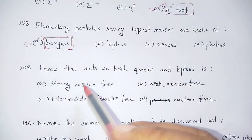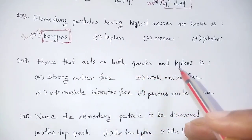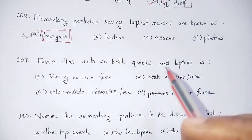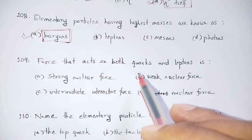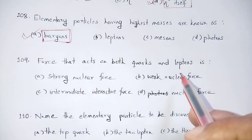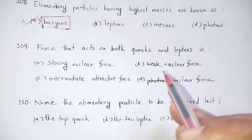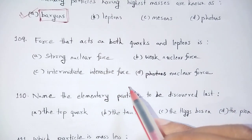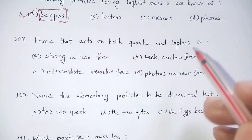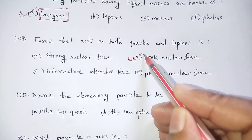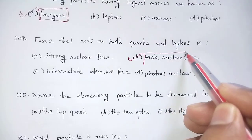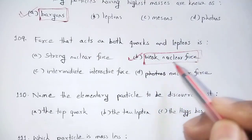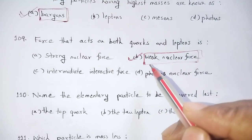The force that acts on both quarks and leptons is the weak nuclear force. Options: strong nuclear force, weak nuclear force, intermediate interactive force, nuclear force. Weak nuclear force governs lepton interactions — weak nuclear force is correct.